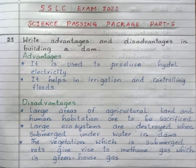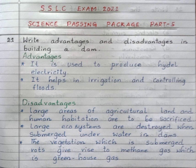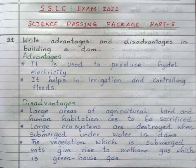With continuation, write the advantages and disadvantages of building a dam. The advantages of building a dam are: it is used to produce hydel electricity, it helps in irrigation, and also in controlling floods. These are the advantages of building a dam.